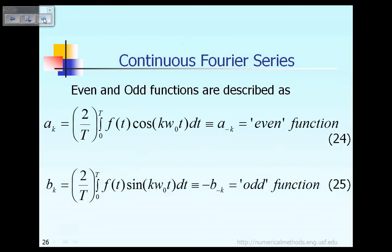Similarly, we also give you the formula to calculate the constant ak, as indicated in equation 24. According to equation 24, the constant a sub k is given as 2 divided by capital T, times the integral from 0 to T of f of t times cos(k·ω₀·t) dt.